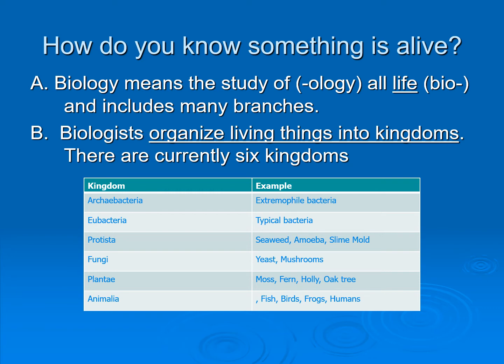Next kingdom is Protista — you see seaweeds, amoeba, and slime mold. Slime mold would be found in standing water, for example. Then we have our fungi, which are yeast, mushrooms, and mold, and other types of mold.